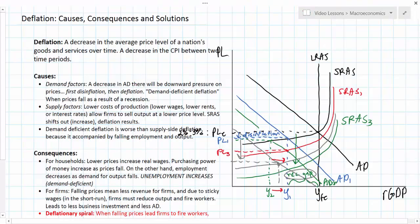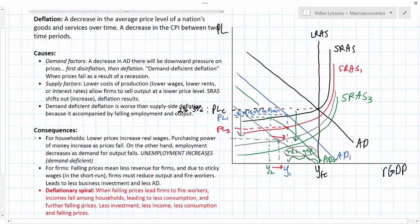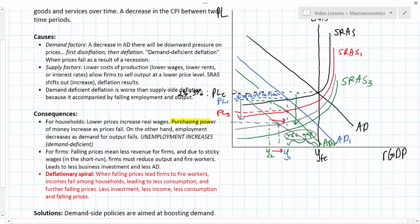So in this lesson, we've defined deflation. We've talked about the demand and supply factors that can cause deflation. We've talked about how deflation affects households on one hand in a positive way, as it increases the purchasing power of their incomes. Deflation increases purchasing power of money as prices fall. But that leads to an incentive for people not to spend money but to save.